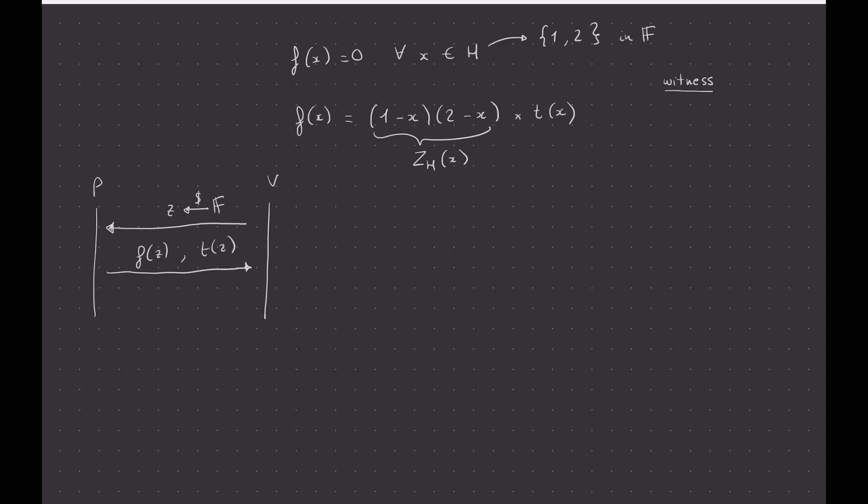And then the verifier can check that f(z) is equal to zh(z), which they can compute, times t(z). And that pretty much tells the verifier that this polynomial indeed vanishes on all the points of the domain that they agreed on in the very beginning. So if you look at Plonk, it's basically something that eventually wants to check something like that, and that's pretty much the idea of the protocol.